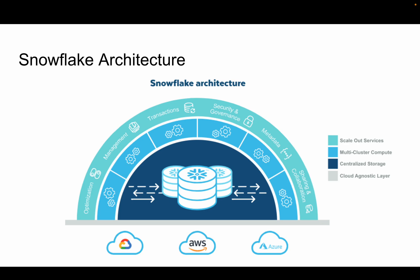Snowflake uses the compute power and various services from each cloud provider. The cloud services layer is the brain of Snowflake. In the case of AWS, the storage is S3 buckets and the compute resources are EC2 instances, and on top of that sits the cloud services layer.